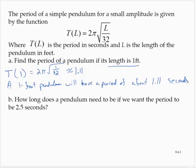How long does a pendulum need to be if we want the period to be 2.5 seconds? So we want the output to be 2.5. We need 2.5 to equal 2π times the square root of L over 32.